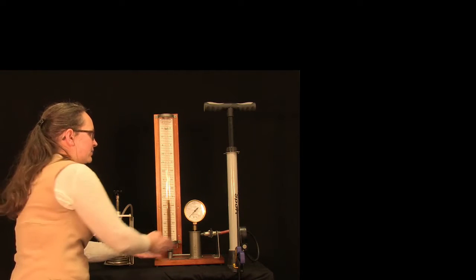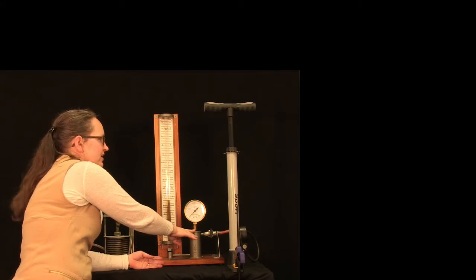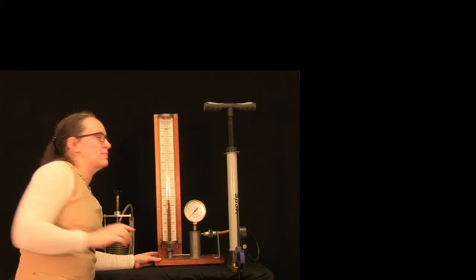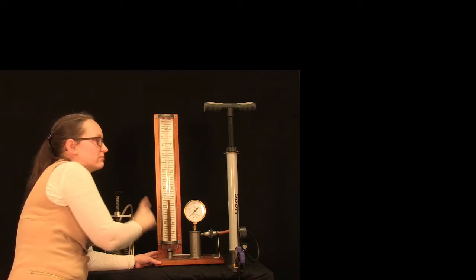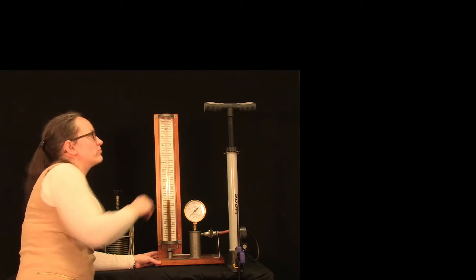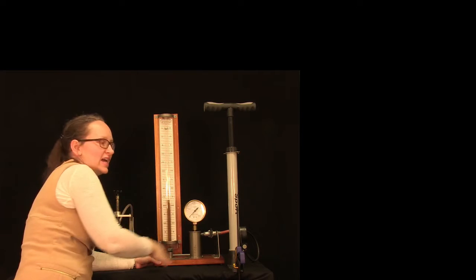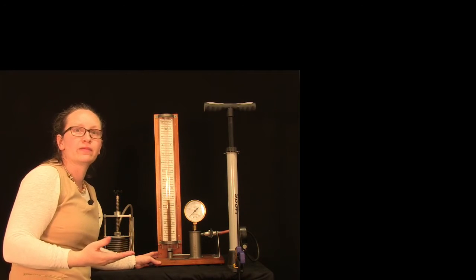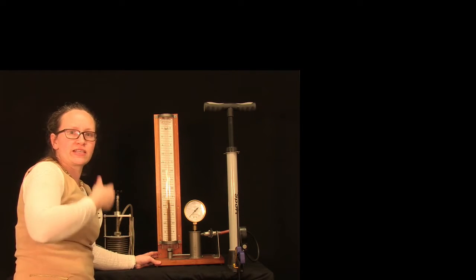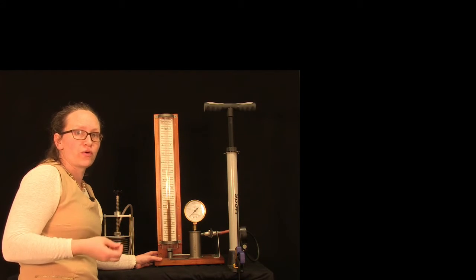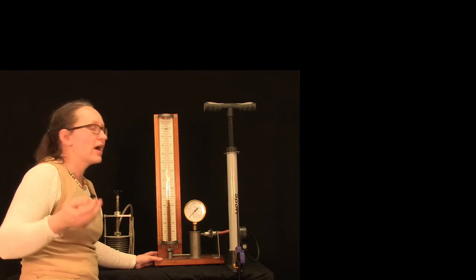So what I have here is a pressure gauge and it's measuring the pressure of this air in here. For this demo, remember, it's the air that we're looking at rather than the oil. So we can read off the volume of the air here, and there's a bike pump here to increase the pressure of the air. So what we're going to do as we do this demo is plot a little graph showing how pressure and volume are related.